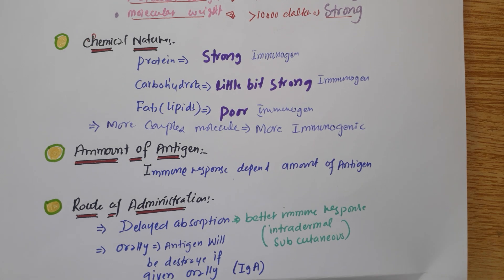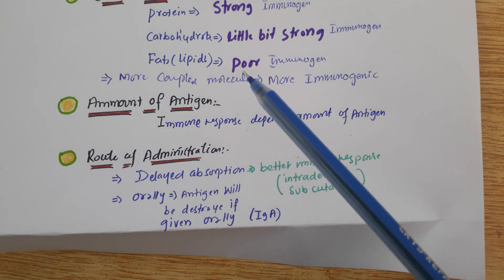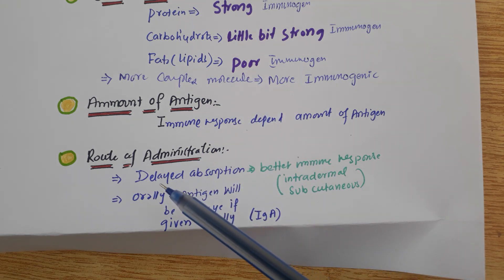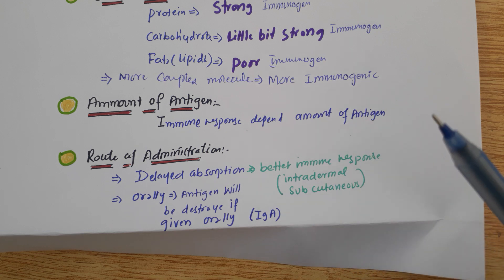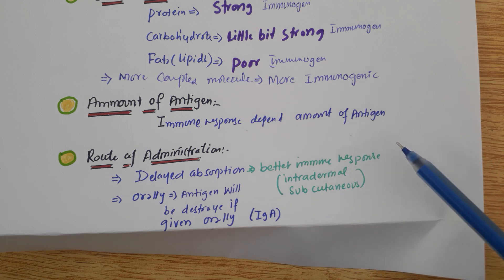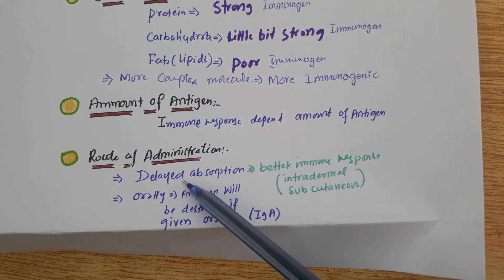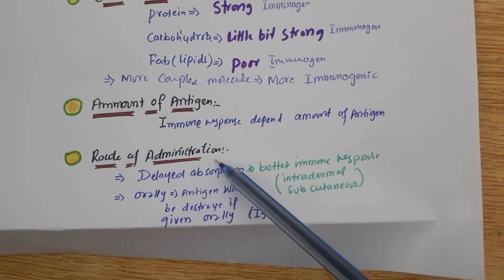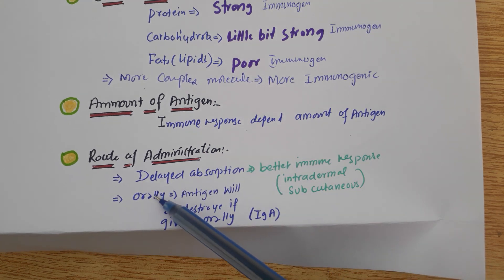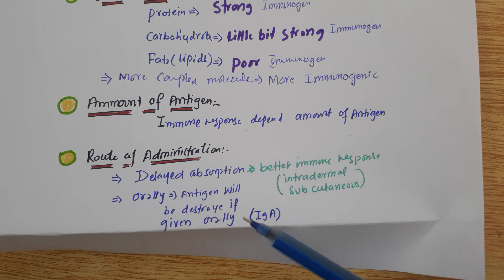Route of administration also affects the immune response. If the immunogen is taken orally, we have IgA which will destroy that immunogen or antigen. A delayed absorption leads to a better immune response. If the antigen is taken orally, it will be destroyed by IgA.